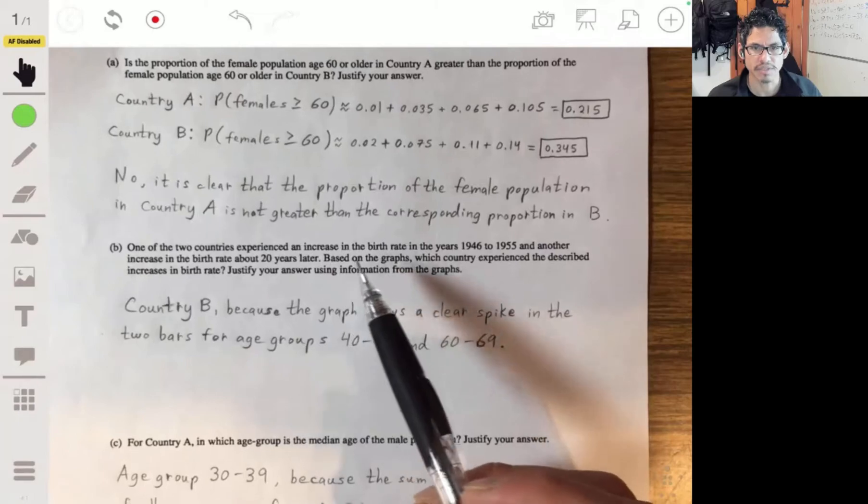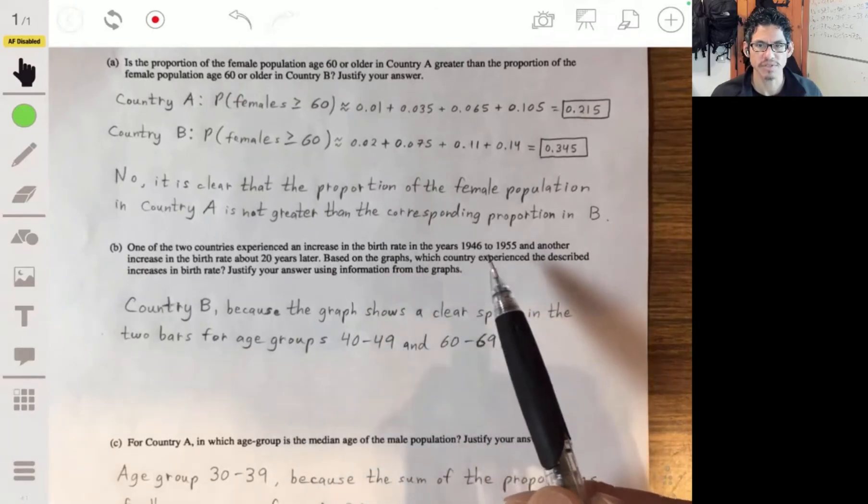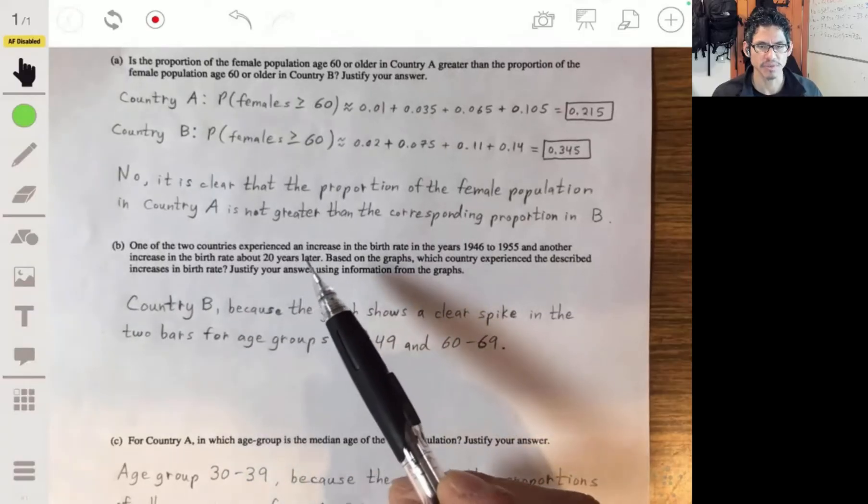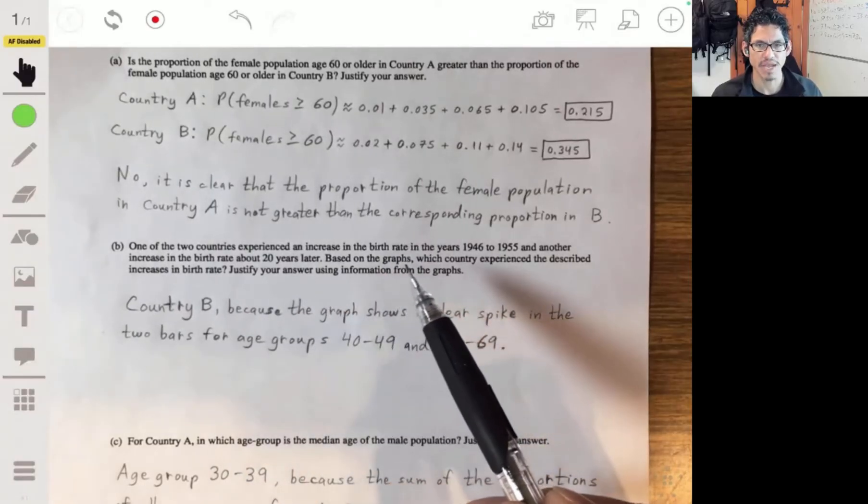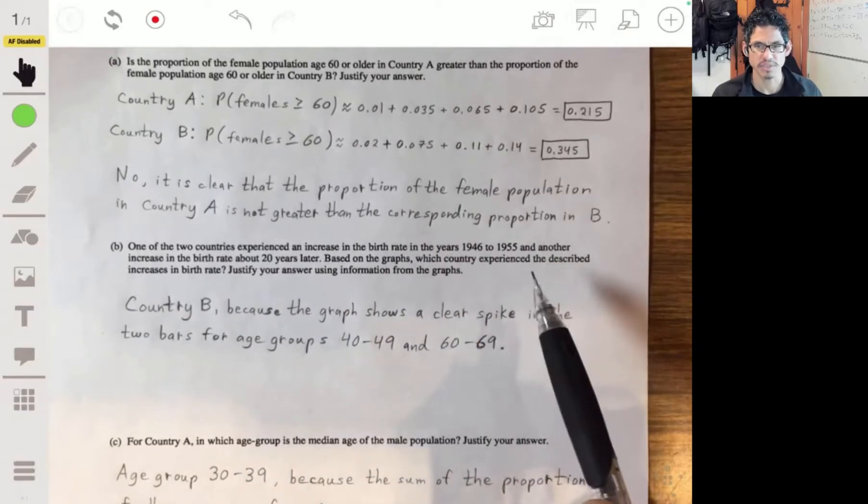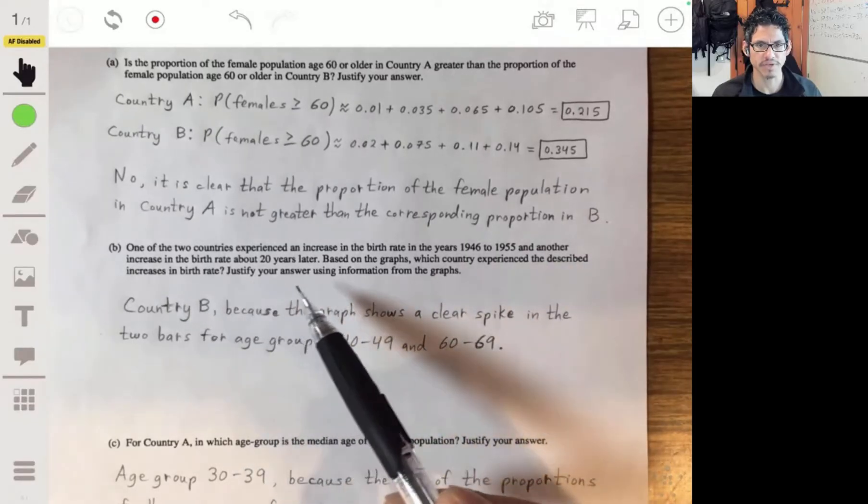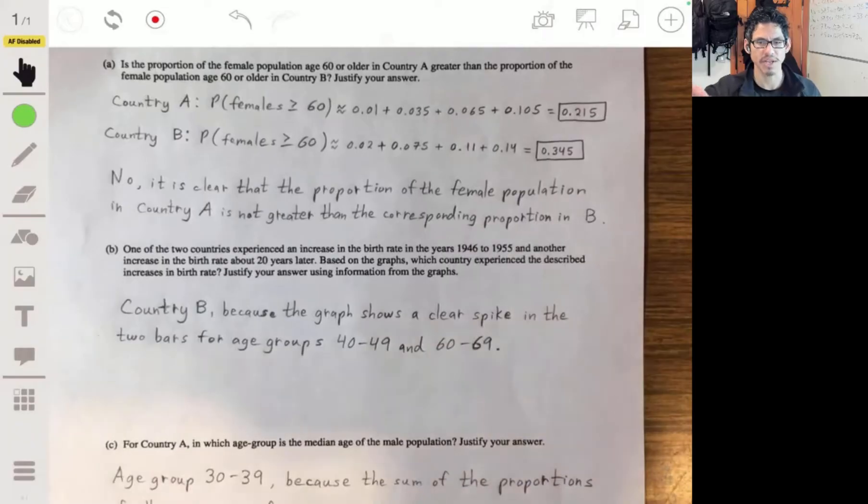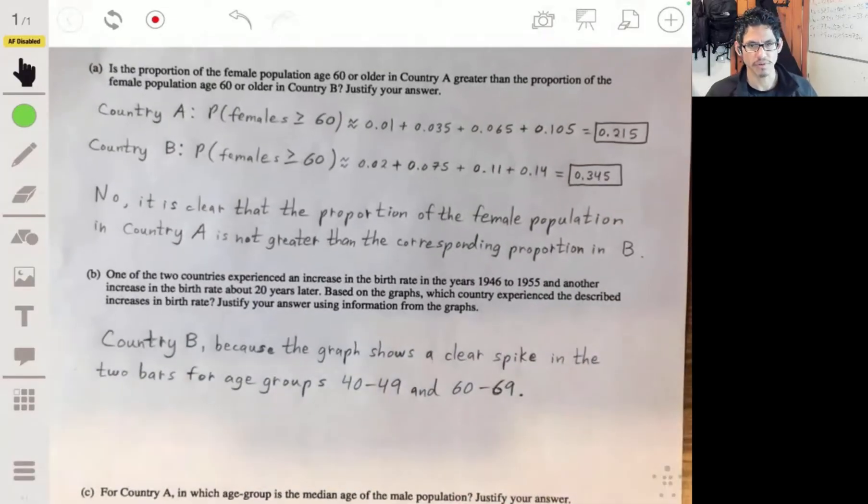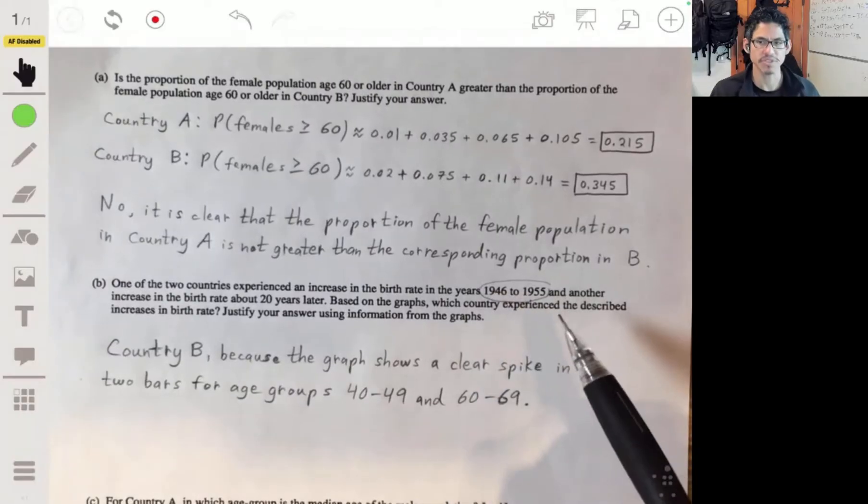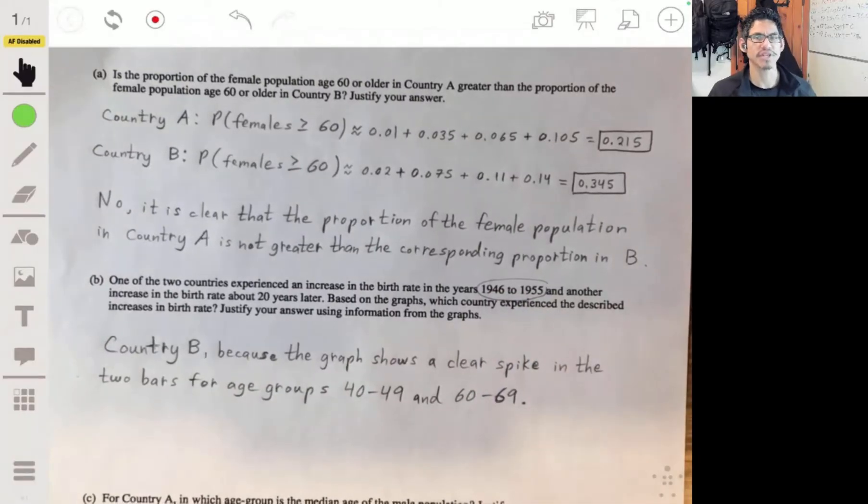One of the two countries experienced an increase in the birth rate in the years 1946 to 1955, and another increase in the birth rate about 20 years later. Based on the graphs, which country experienced the described increases in birth rate? Justify your answer using the information from the graphs.